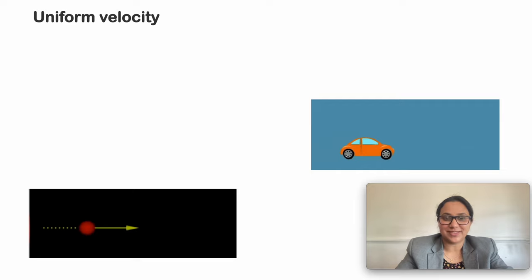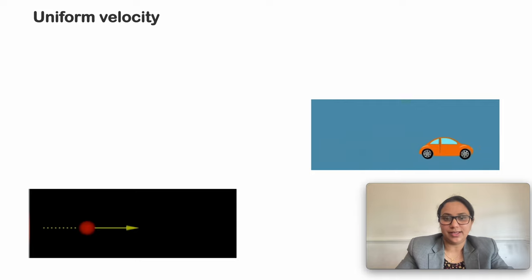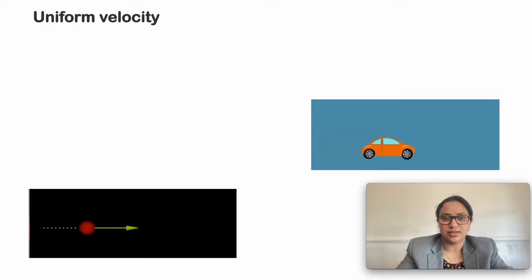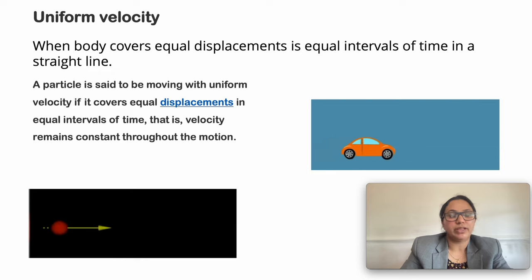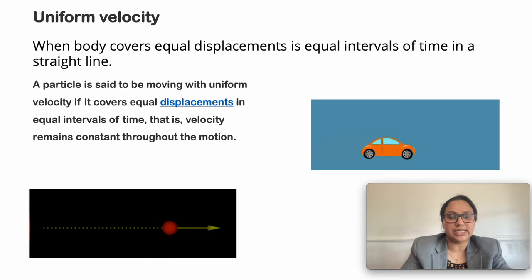What is uniform velocity? Let us take an example. Suppose we are travelling to Delhi and we are covering the same distance — in each hour we cover 60 km in a specified direction. That means the body is said to be moving with uniform velocity when it covers equal displacement in equal intervals of time in a straight line. A particle is said to be moving with uniform velocity if velocity remains constant throughout the motion.